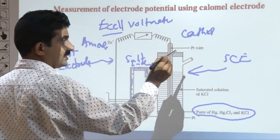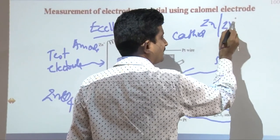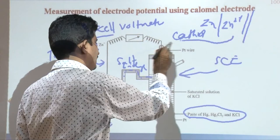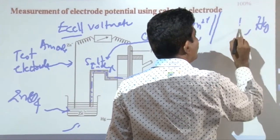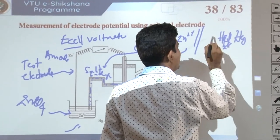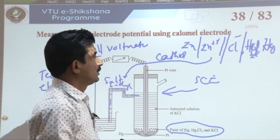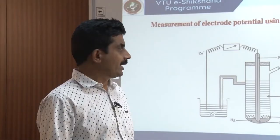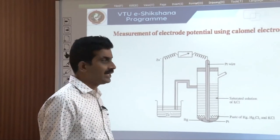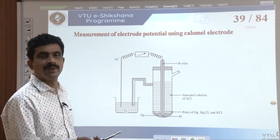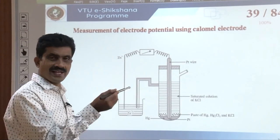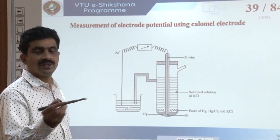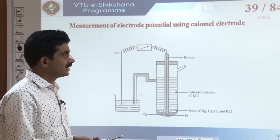The net cell reaction is: Zn + Hg₂Cl₂ → Zn²⁺ + 2Hg + 2Cl⁻. The EMF is determined by potentiometric method. Since E_cell = E_cathode − E_anode, and cathode is the saturated calomel electrode (SCE): E_cell = E_SCE − E_Zn. Since the potential of the calomel electrode is known, and E_cell is measured by the voltmeter, the potential of the zinc electrode can be calculated.